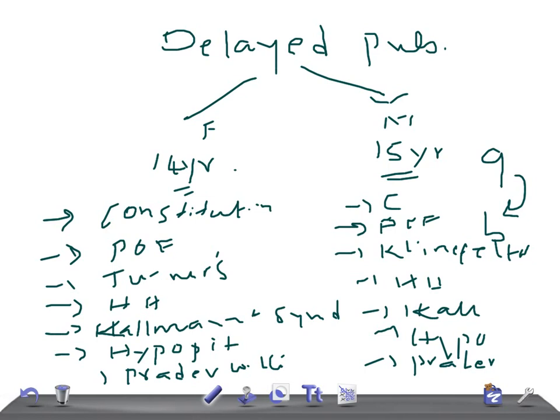Look for family history—if the father and mother had delayed puberty, that can indicate constitutional delay. Read the clinical history very carefully. In examination questions about delayed puberty, the clinical history is key. Thank you for watching.